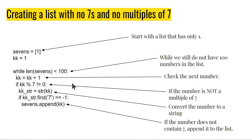I also need to check whether this number contains the digit 7. For example, 17 is not a multiple of 7, but 17 does have a 7 in it. To check this, I convert kk into a string. Once converted, I can use the string find method to check if the number contains 7 or not. The find method returns minus 1 if the substring is not found. So if the number doesn't contain 7, find returns minus 1 and I append it to the list. This way the list keeps growing until it reaches 100 numbers — all of which are neither multiples of 7 nor contain the digit 7.